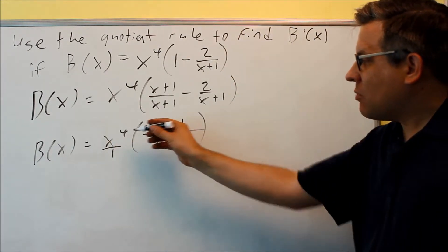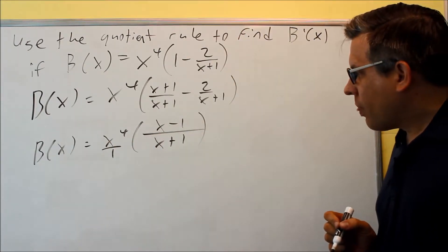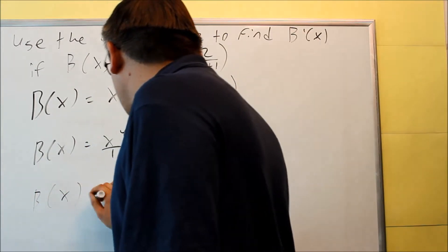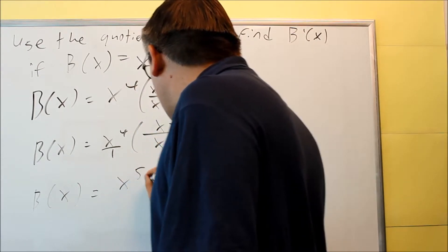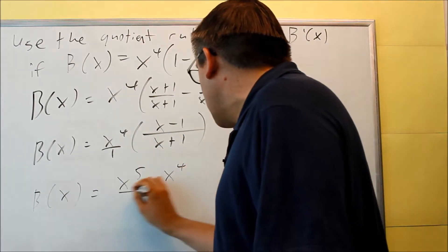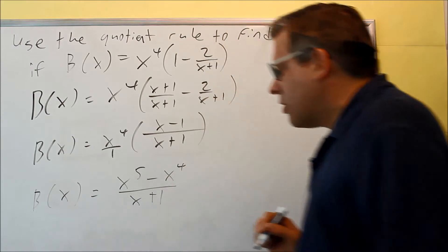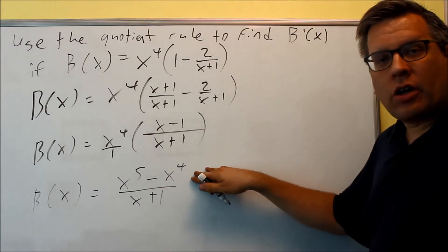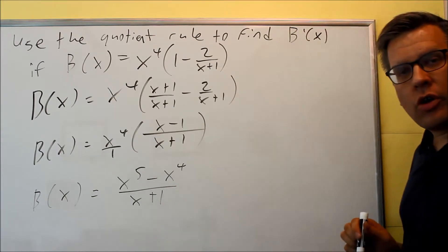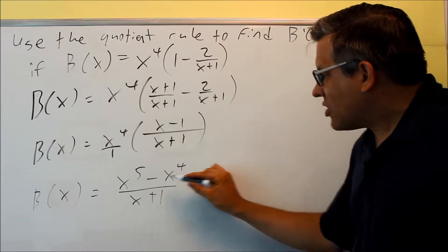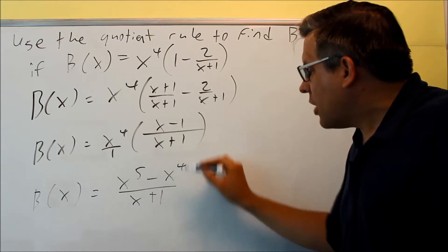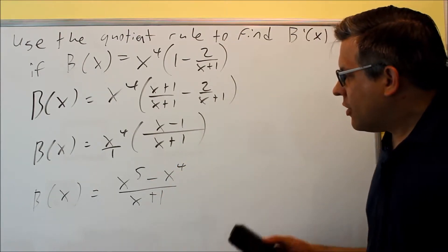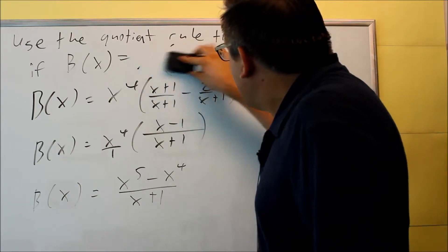Then, this is the same thing as x to the fourth over 1, and so then I can just multiply that out in the top, and I'll get x to the fifth minus x to the fourth, x plus 1 in the bottom. So, I've taken it from this form all the way into here. Now, this is the one I'm actually going to work with when I take the derivative. My f is now going to be this part on top. My g is going to be the one down below.